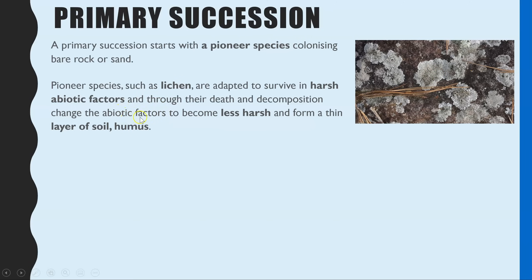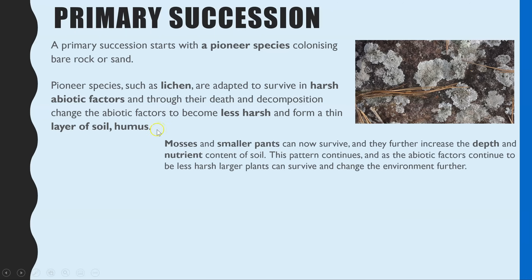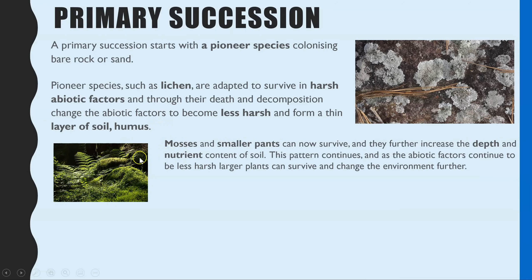How lichen then change the abiotic factors is that over time they die and decay — while also reproducing — so you constantly have lichen present. As they die and decay, they start to produce a very thin layer of soil called humus. Because there is now this thin layer of soil, moss and smaller plant seeds can lodge into it, and the soil retains some water and minerals, allowing these plants to survive.